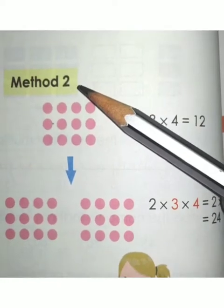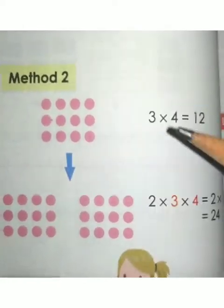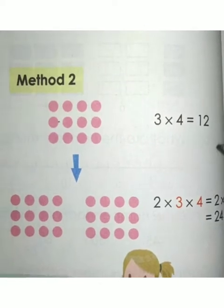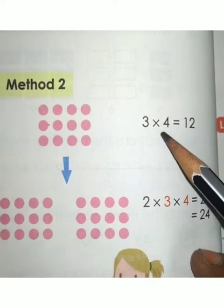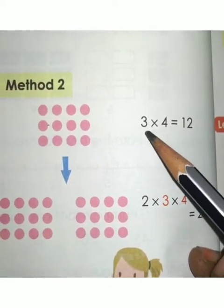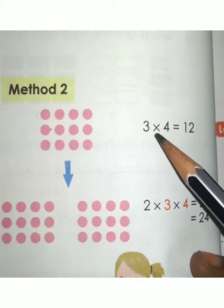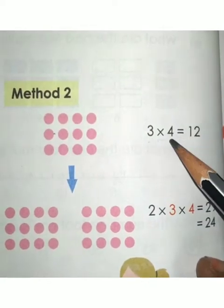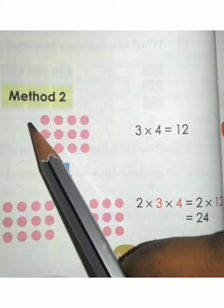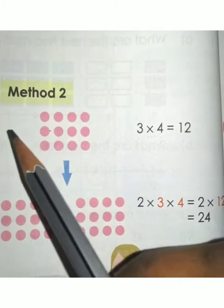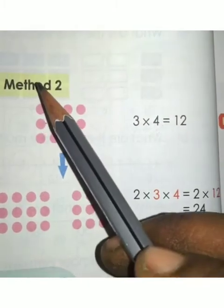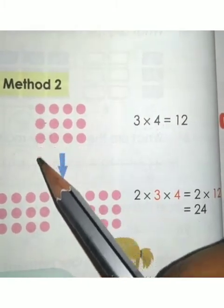Now consider the second method. This time we are not going to take 2 × 3 first. Instead, consider 3 × 4 first, which means 3 rows and 4 columns. See here: 1 row, 2 rows, 3 rows — that's 3 rows and 4 columns.